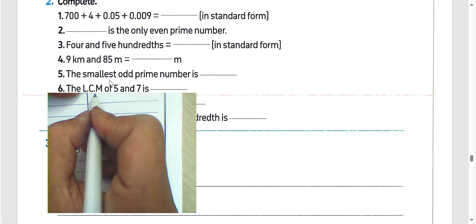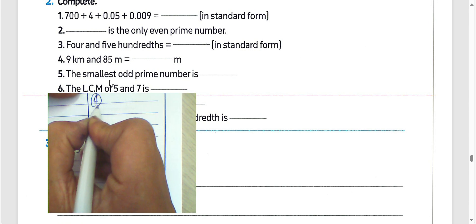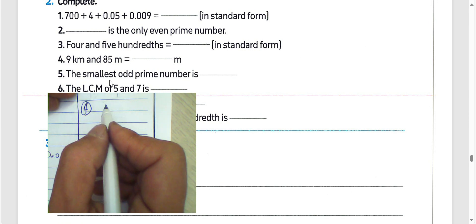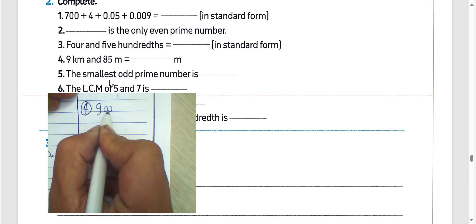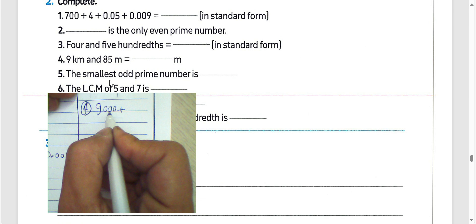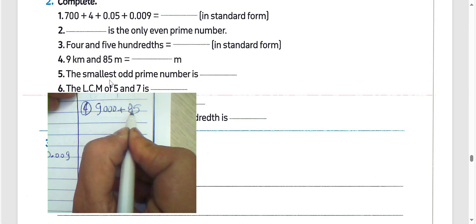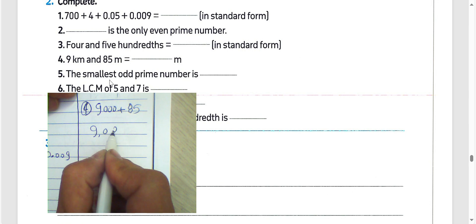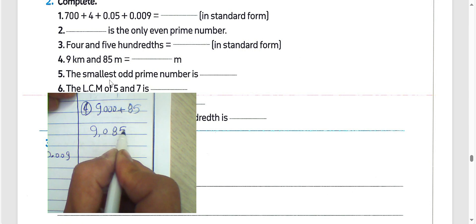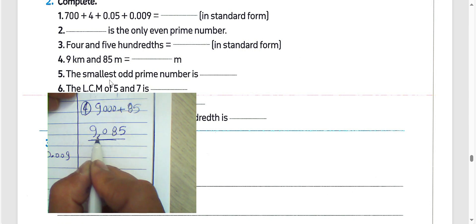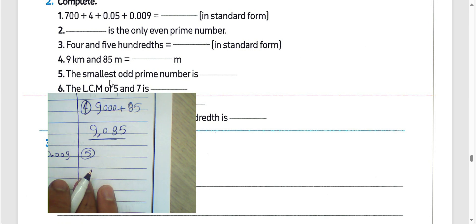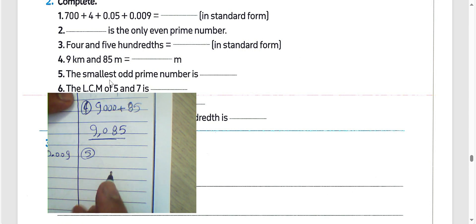Question number 4: 9 kilometers and 85 meters — we can write 9000 plus 85, the result will be 9085 meters. Question number 5: the smallest odd prime number is 3.